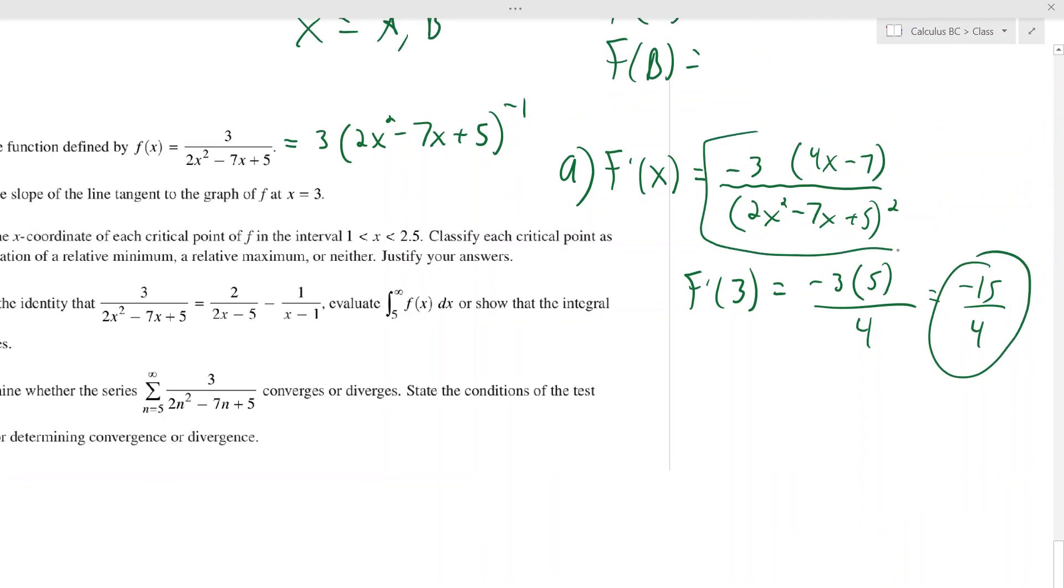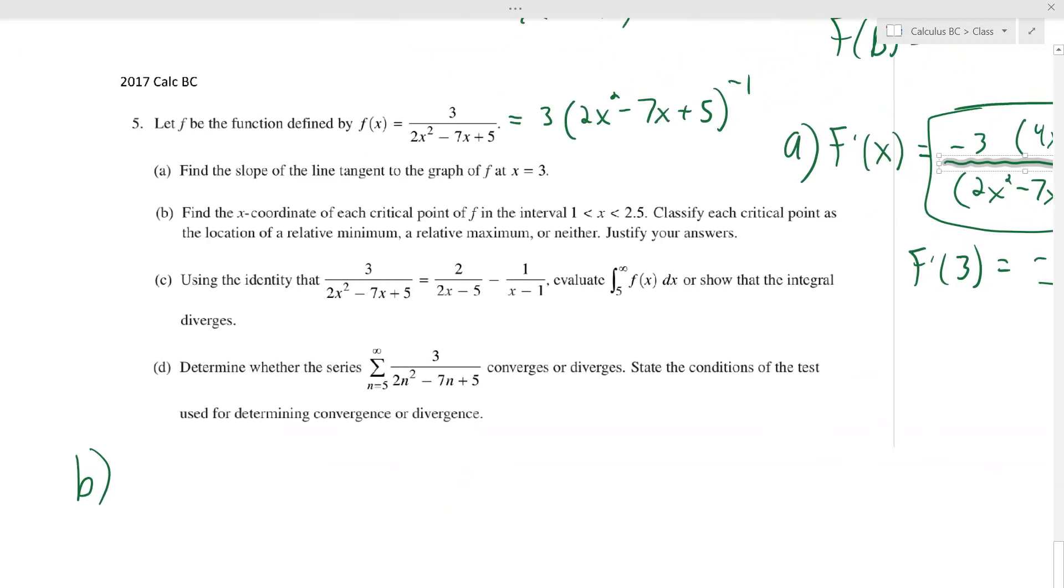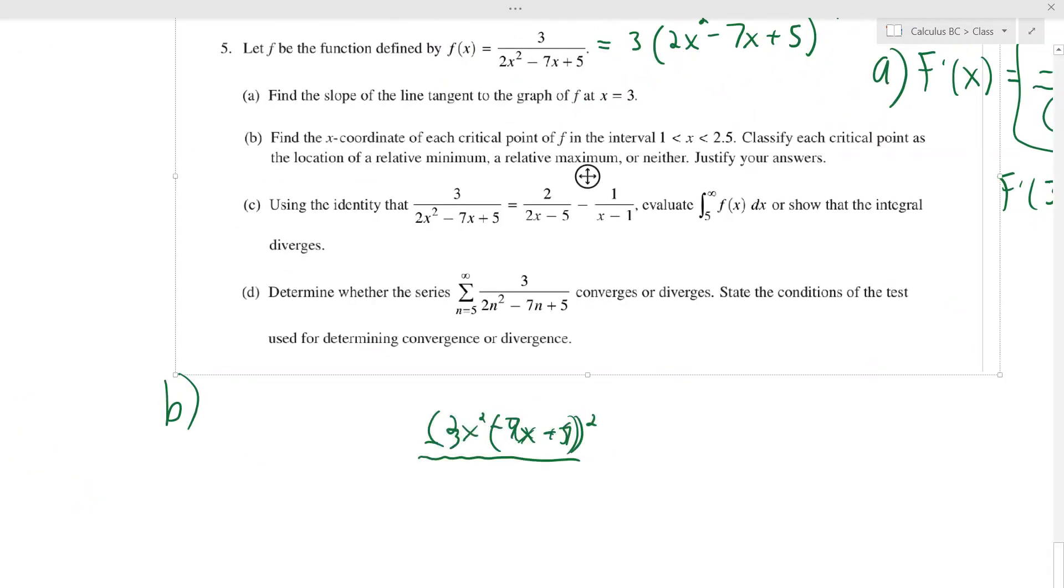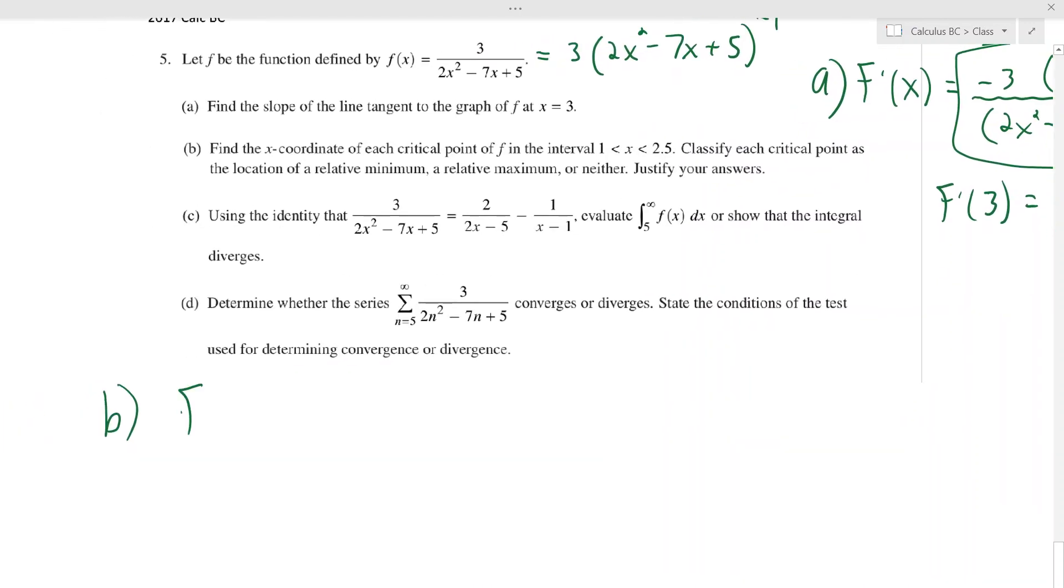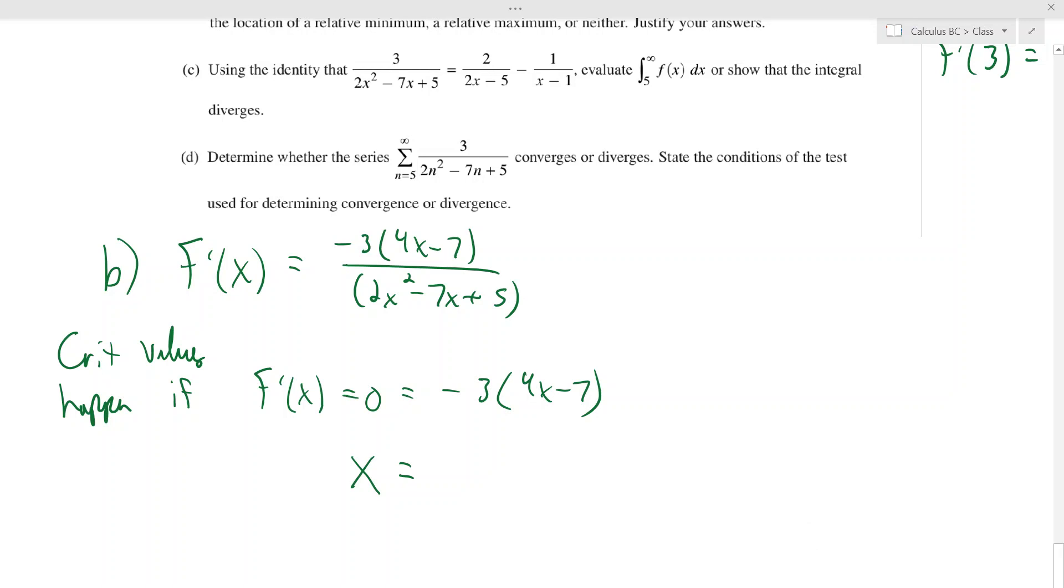So they gave us endpoints but they're not included. We want to find all the critical values, critical point of f on the interval. So we got to derive it, which we already did. That's over here. Let me just steal that copy. Getting a little wonky on me here. You got to find f prime x equals, and I forget what I had already. It's negative three times what, four x minus seven over two x squared minus seven x plus five. Critical values happen if f prime of x equals zero. So that's solving this. That's going to give me that x equals seven fourths, which is 1.75, and that's in our window. Because we're going up to 1 to 2.5.